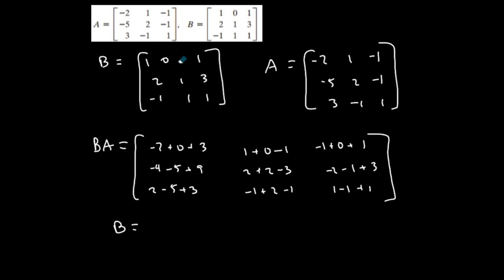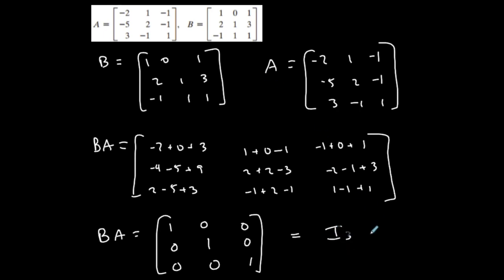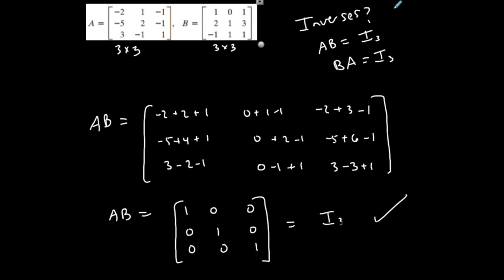So BA equals: 1, 0, 0; 0, 1, 0; 0, 0, 1 — which is the identity matrix I₃, exactly what I want. Since BA equals the identity matrix I₃ and AB also equals the identity matrix, yes, these two matrices are inverses of each other.